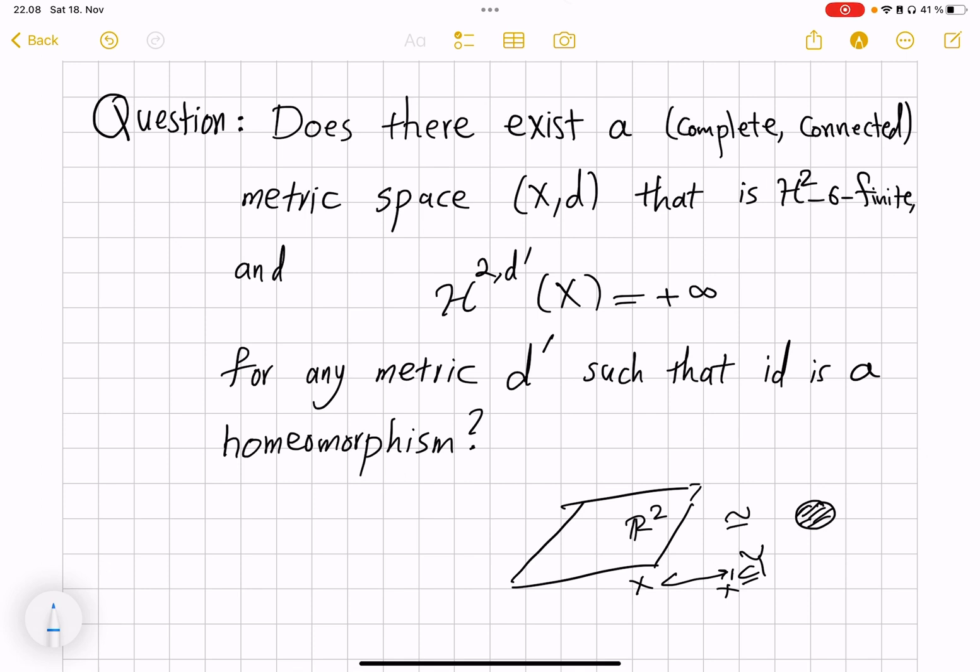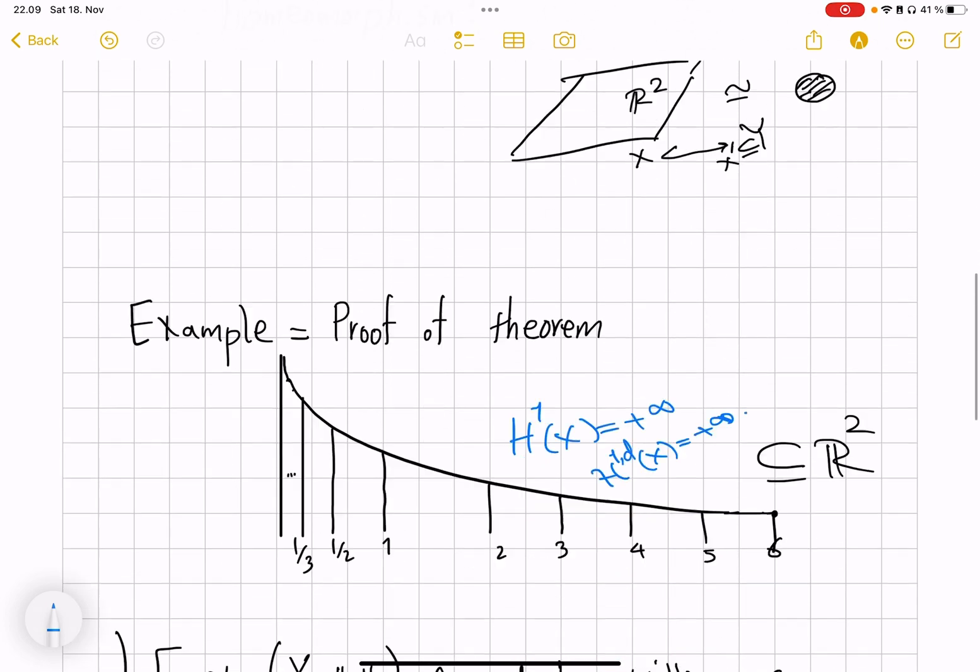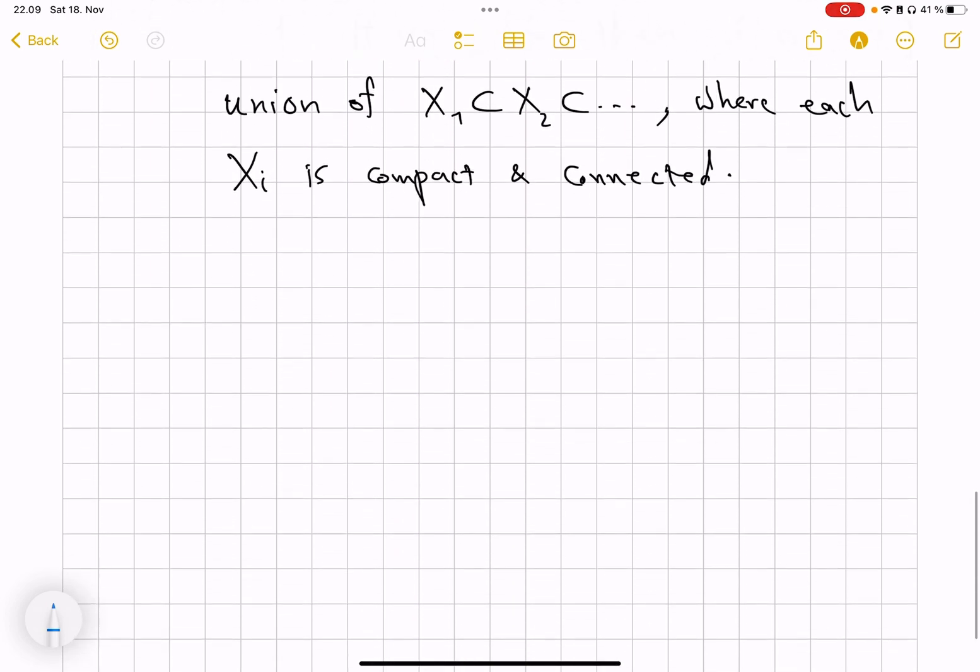Okay so back to my question, can you do a two-dimensional version of this? Can you find a metric space that is truly infinite Hausdorff 2 measure under all metrics within the same homeomorphism class?